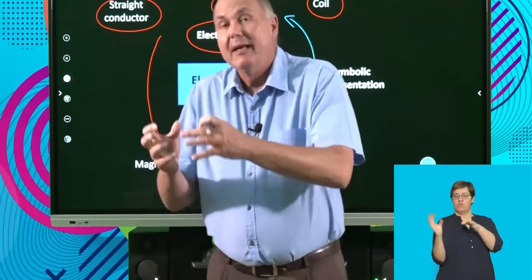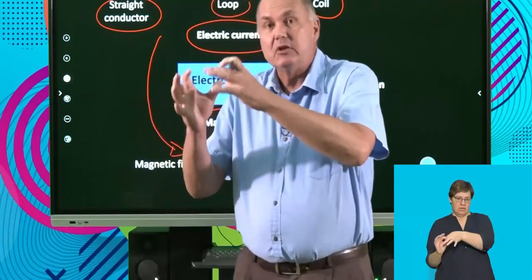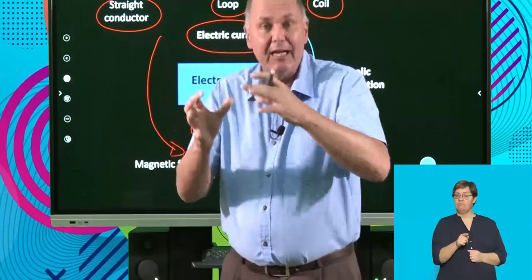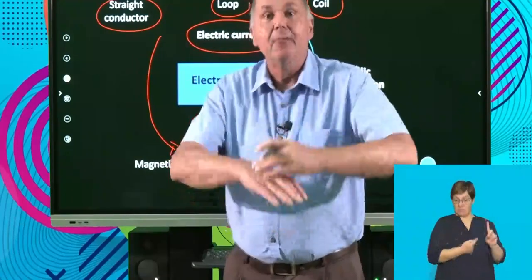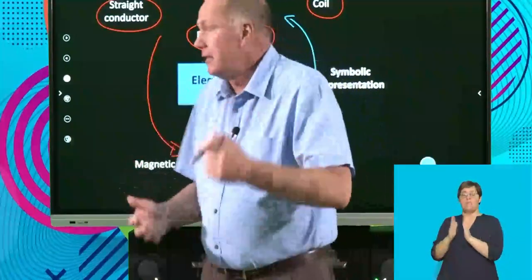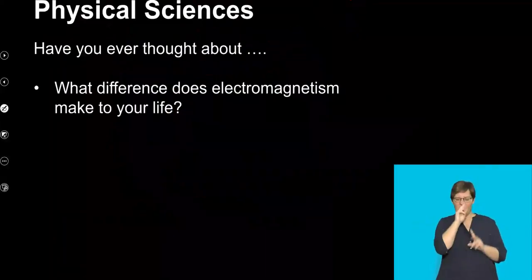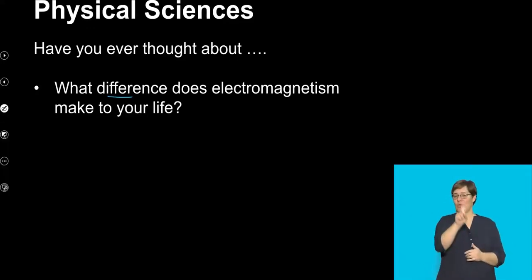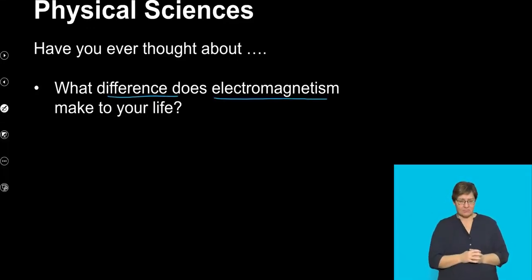The relationship related to the starting point: we have an electric current that produces a magnetic field, and we can see this happening all around us. In fact, that's the question I'd like you to think about — what difference does electromagnetism make to your life?